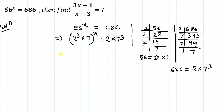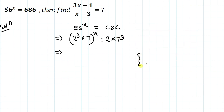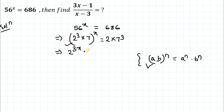Now we apply the exponential law: (ab)^n = a^n × b^n. Applying this law, the left side becomes 2 to the power 3x multiplied with 7 to the power x, and the right side is 2 multiplied with 7 cubed.